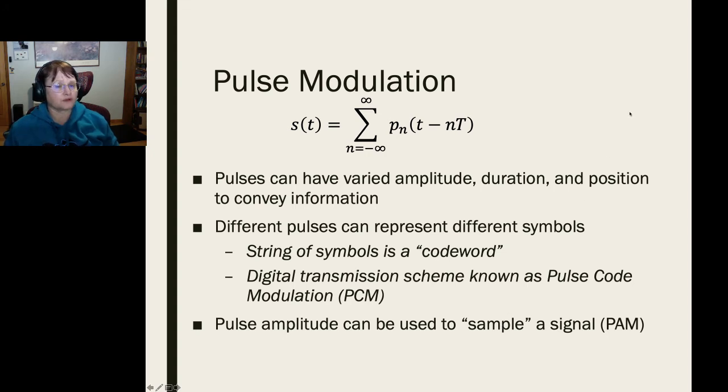And then finally there's the pulse modulation case that is often used in digital communication. There's many things you can change with a pulse. You can change its amplitude, its duration, that's called pulse width modulation, or you could use its position within a pulse period as well. Different pulses will represent different symbols. A string of these symbols is known as a code word, and you can use these code words to help you get rid of digital errors. One example of these schemes is known as pulse code modulation, where we have a way of encoding the information and then encode it either for security or for better transmission, or usually for both.